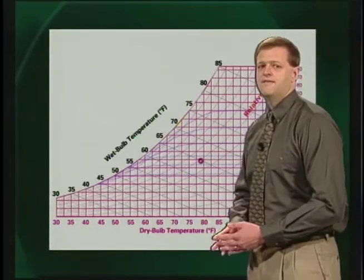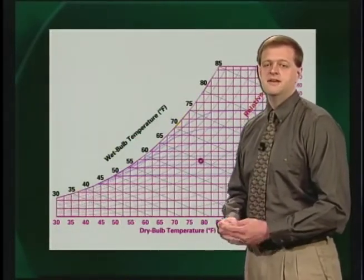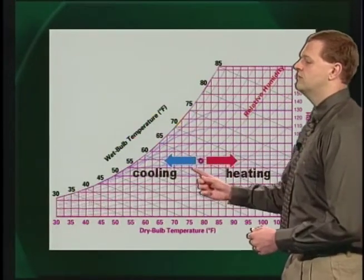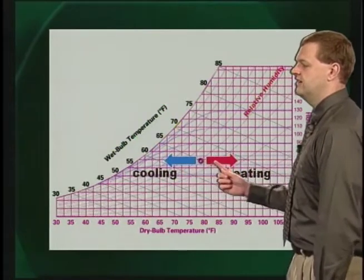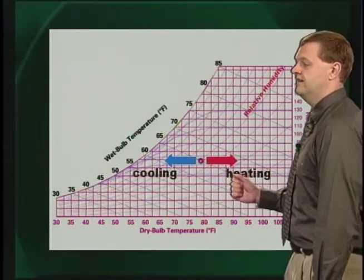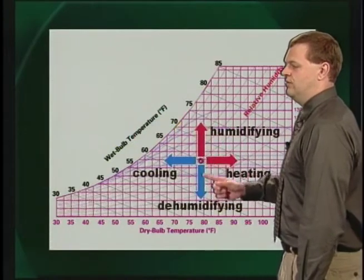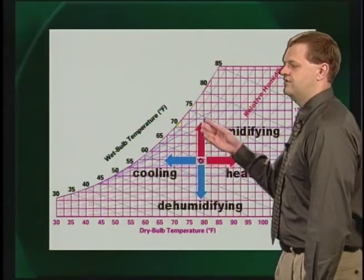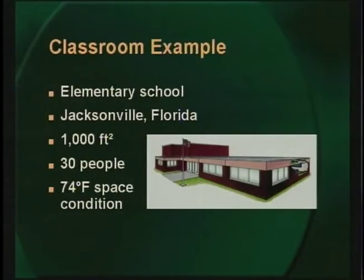The psychrometric chart is often used to graphically represent the basic processes that occur within an HVAC system. For example, if sensible heat is added or removed with no change of moisture content, the condition of the air moves horizontally on the chart. On the other hand, if moisture is added or removed without changing dry bulb temperature, the condition of the air moves vertically on the chart. Throughout this broadcast, we will consider an example classroom in an elementary school.